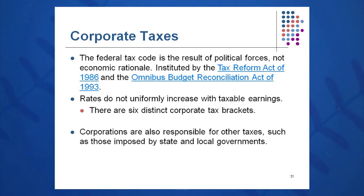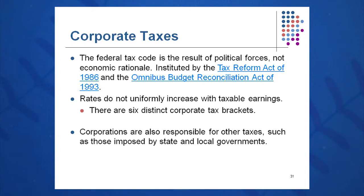The federal tax code states that we will pay corporate taxes according to the Tax Reform Act of 1986 and the Omnibus Budget Reconciliation Act of 1993. So we're dealing with a political process here. The rates don't increase uniformly with tax brackets or taxable earnings, and corporations also have to pay other taxes like state and local taxes. These are just the corporate taxes paid to the Internal Revenue Service federal government.